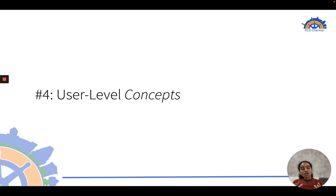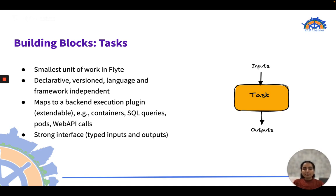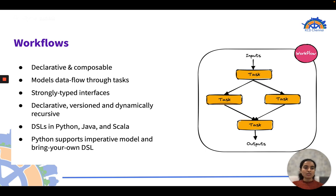Let's look at the user-level concepts of Flight. A task is the building block of Flight — the smallest unit of work that accepts inputs and gives outputs. It has a strongly typed interface, can map to a backend execution plugin, and is declarative, versioned, language and framework independent. A workflow is a collection of tasks arranged in a specific dependency graph — declarative, strongly typed, and dynamically recursive.